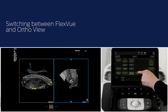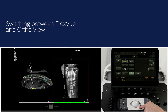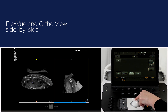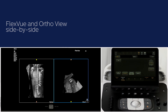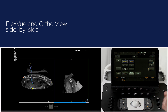Use the left and right trackball buttons to switch between FlexView and ortho view. By pressing the middle trackball button, the reference image will disappear and the FlexView and ortho view will be displayed side by side. Press again to get the reference image and ortho view back.